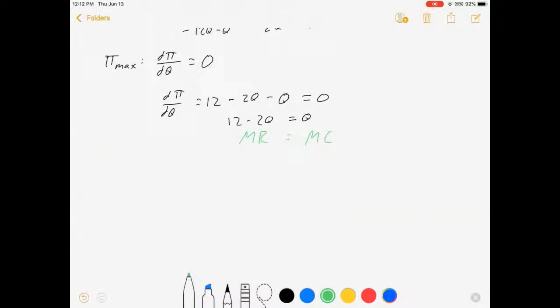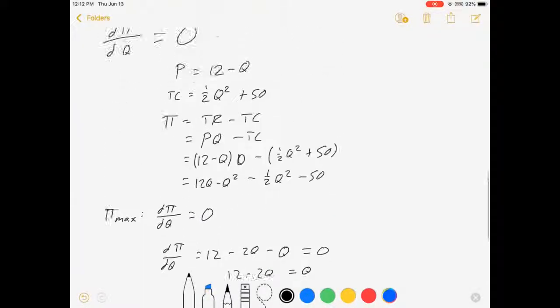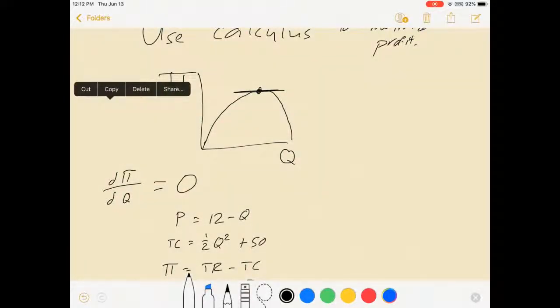And so let's see, we can actually solve for the right Q now. 12 equals 3Q. The optimal quantity for maximizing profit happens at 4. So on this graph you put a 4 there.